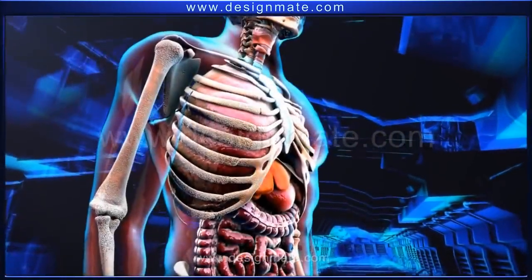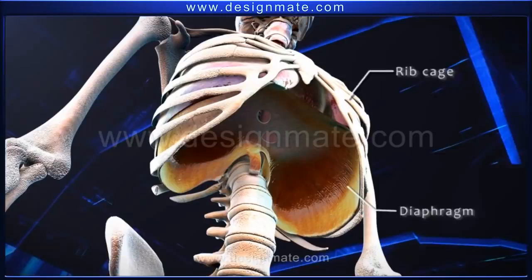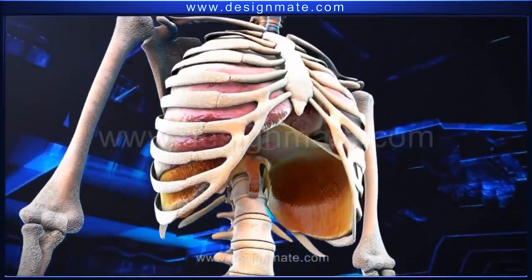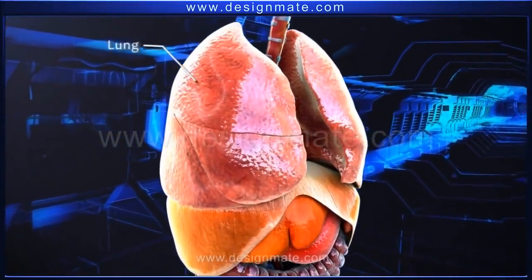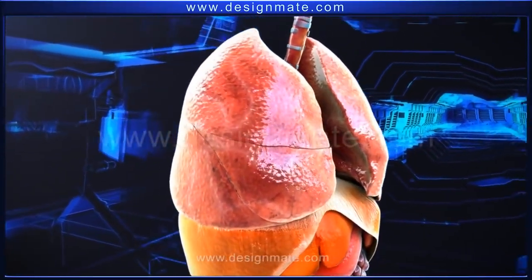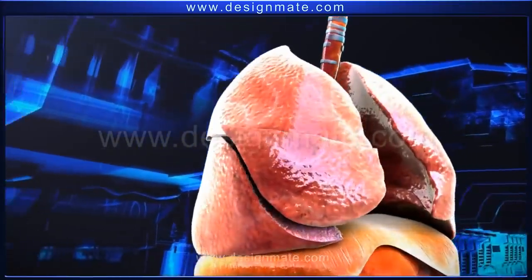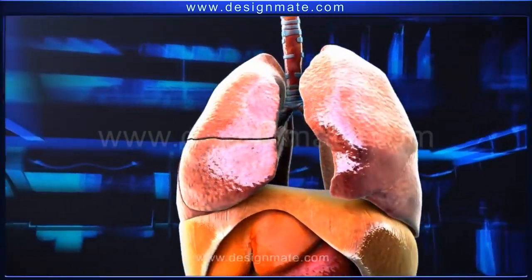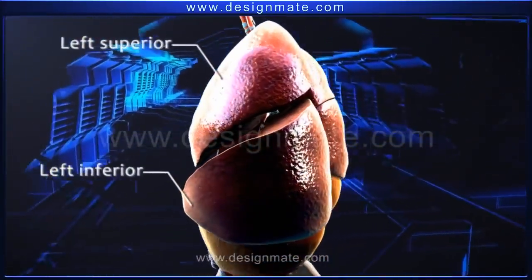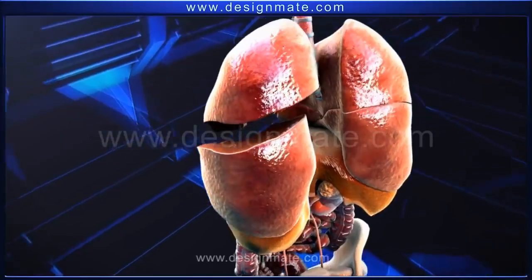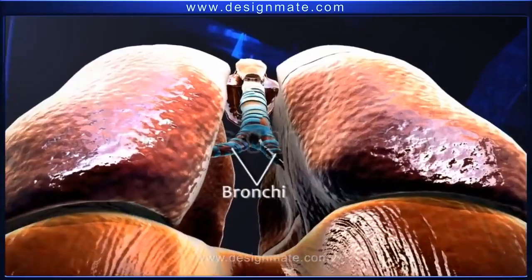In the thorax region, the ribcage and the diaphragm play a vital role in respiration. Present within the ribcage are the pleural membranes, which enclose the lungs. The right lung consists of three lobes, while the left lung has only two lobes. Both lungs are associated externally with bronchi, which unite and extend into the trachea.